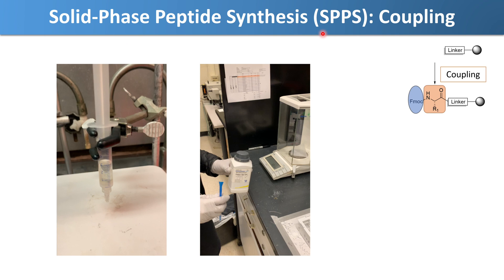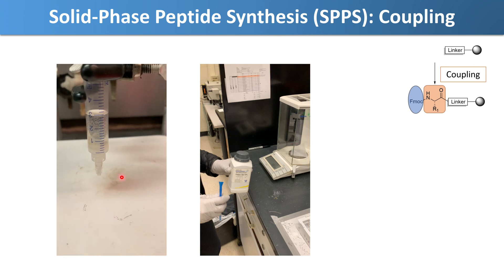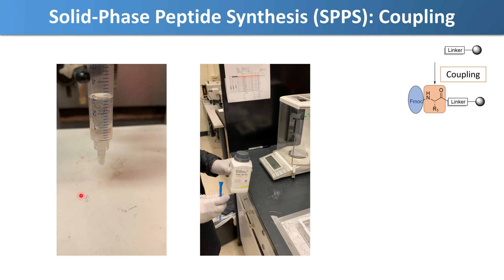So as the name implies, SPPS is done off of a solid support, and this is represented here where it's essentially a bead, which is just polystyrene or plastic, with a chemical linker on it. We've referred to this entity as the resin. In the video on the left here, this is our reaction setup that we do the solid phase peptides in. It's a fritted syringe with a stir bar in it, and in solution there, stirring, is the solid support or the resin. Once we have this set up, we're ready to go with the rest of our synthesis.